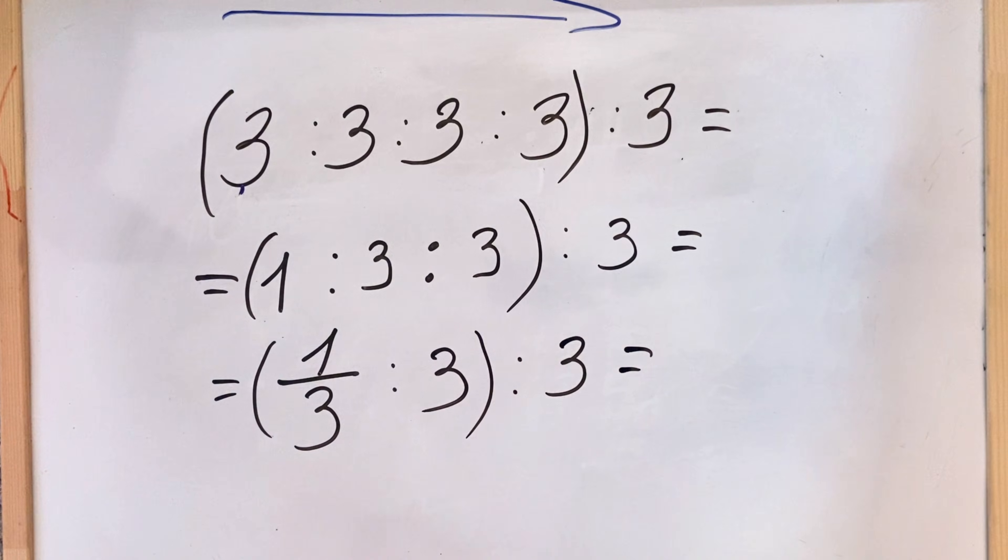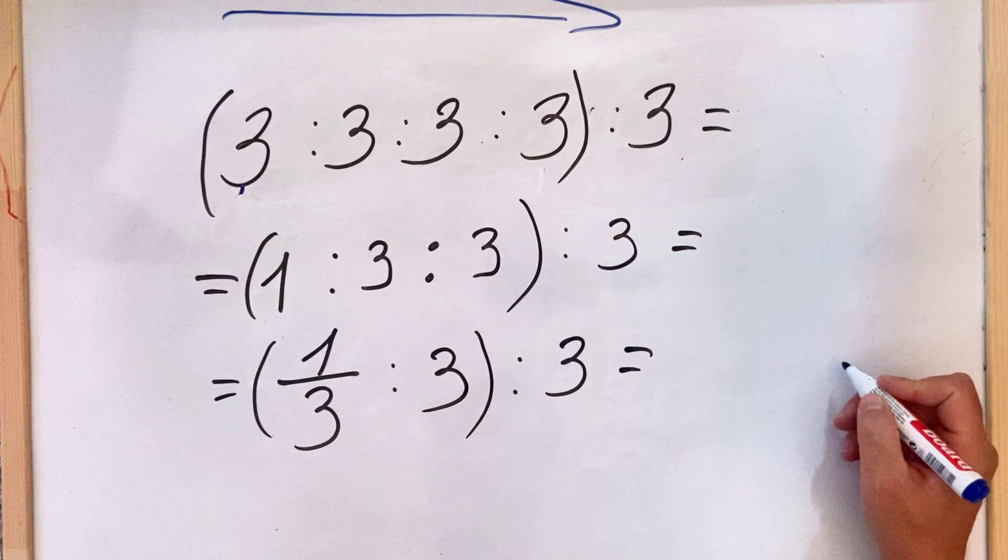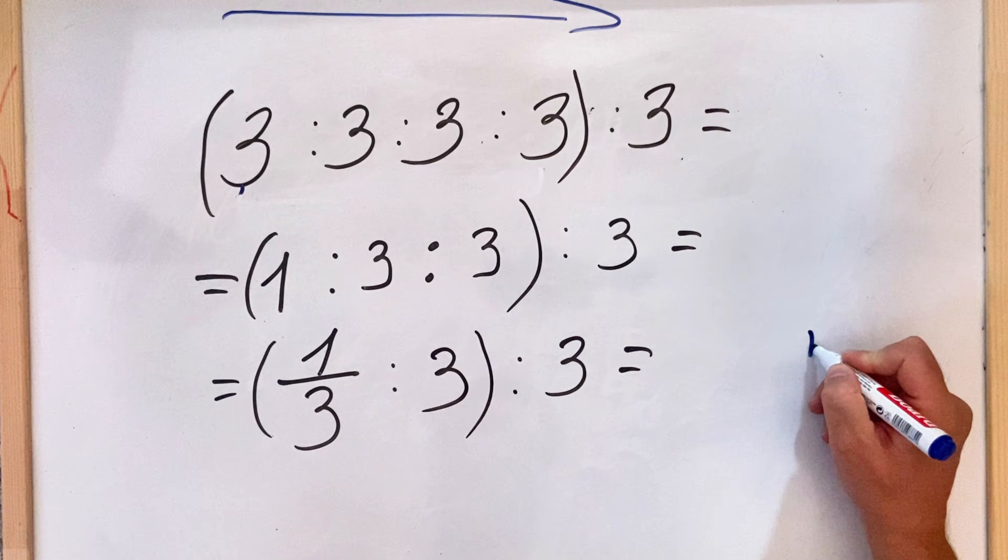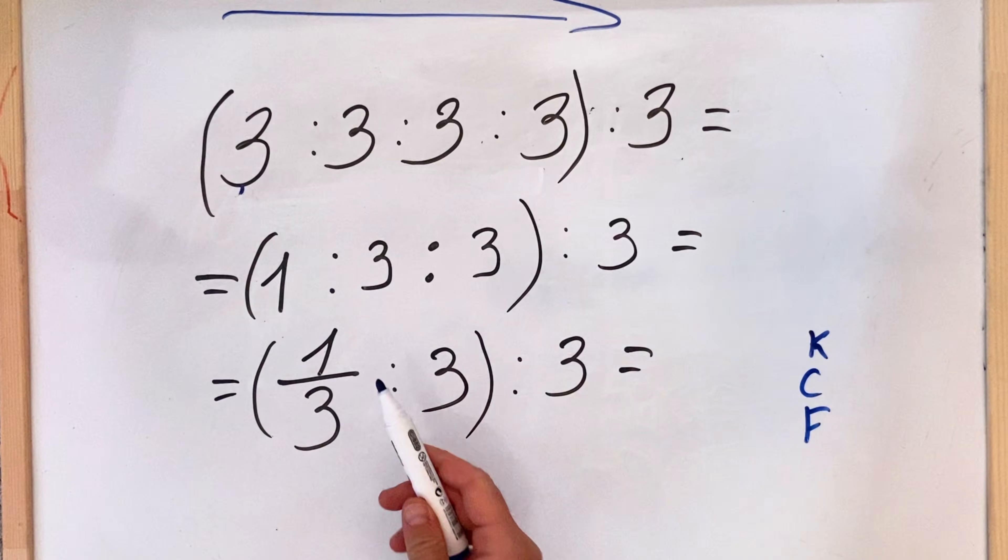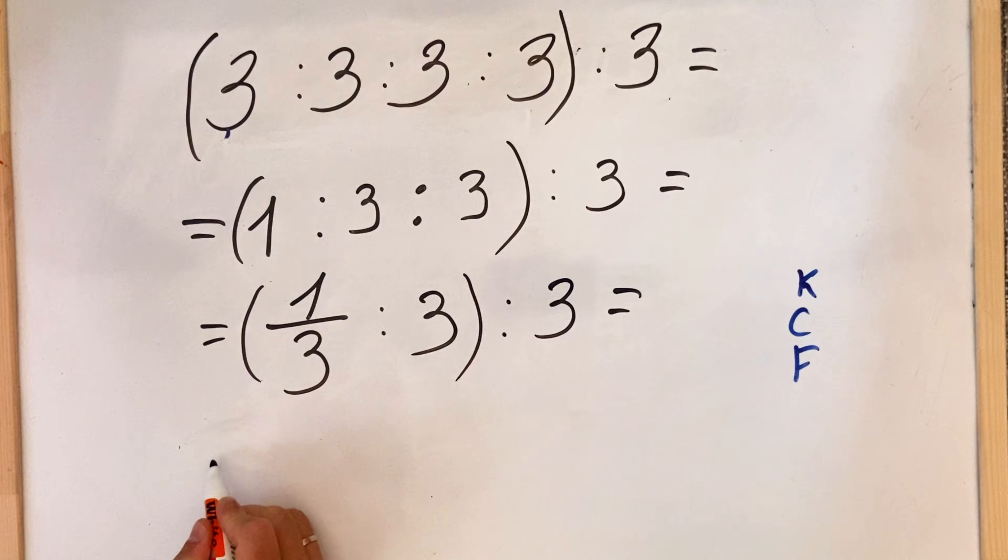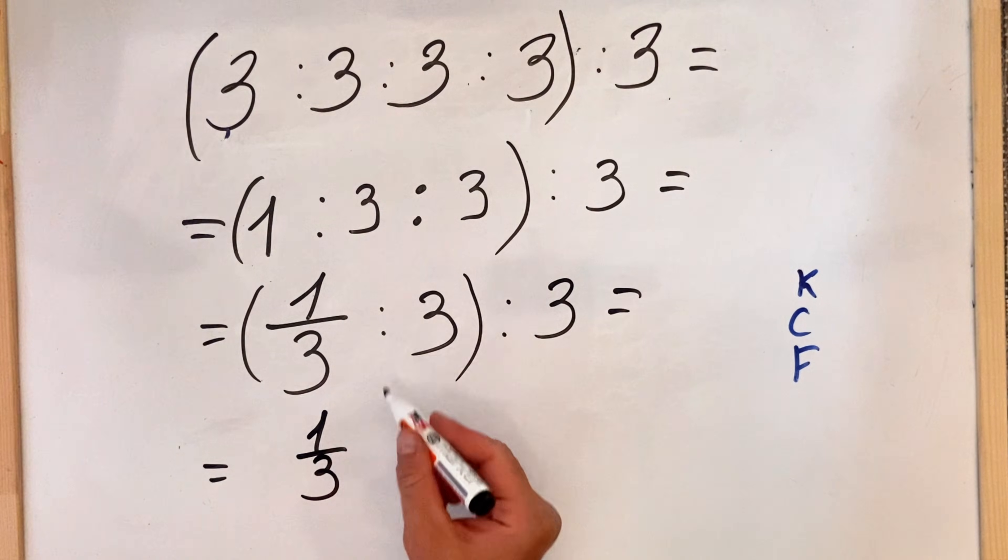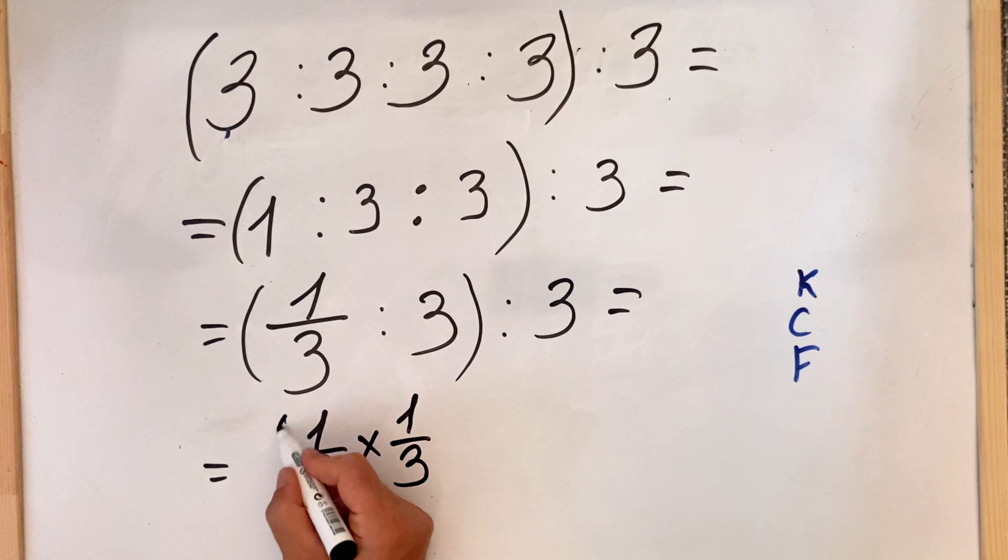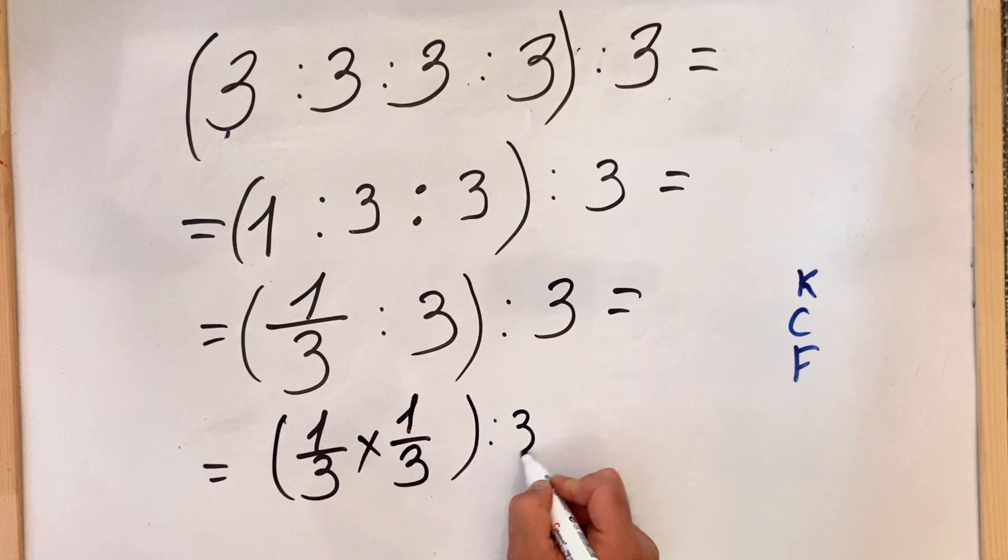When we have a fraction and a division, we must remember the KSF rule, which means keep the first, change the sign, and then flip the third one. Now what we get is 1 third. So we keep the first, we change the sign to multiply, and we flip the second one. So we have 1 third.